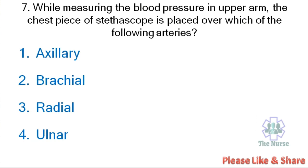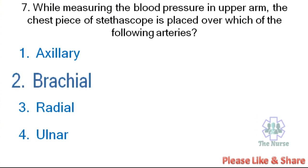Next question. While measuring blood pressure in the upper arm, the chest piece of the stethoscope is placed over which of the following arteries? Options: Axillary, Brachial, Radial, or Ulnar. The correct answer is the Brachial artery.